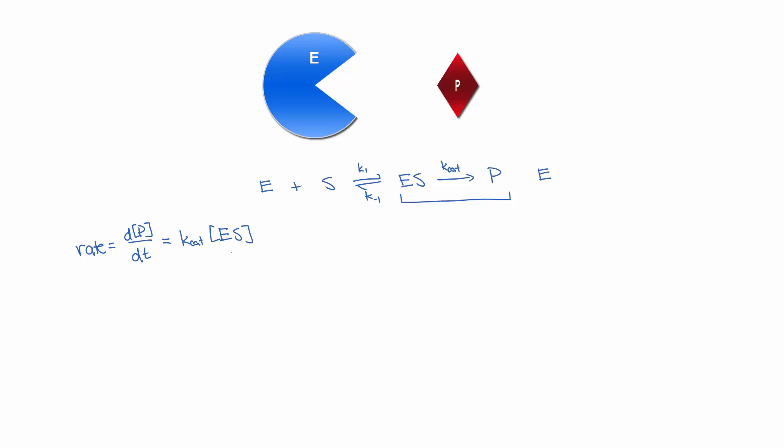Now, the enzyme-substrate complex is an intermediate in this reaction, so it's not able to appear in our overall rate law. We need to find another term to replace the enzyme-substrate complex concentration with. Let's use the steady state approximation to do that.